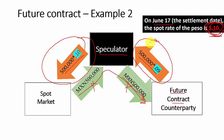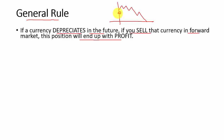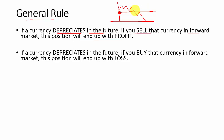Here are the general rules: if a currency depreciates in the future and you sell that currency in the forward or futures market, that position will end up in profit — you sold at a high price and can buy low later. However, if the same currency is expected to go down and you decide to buy in the futures market, that is a loss, because at the future date the currency is low but you still have to pay the higher locked-in price.